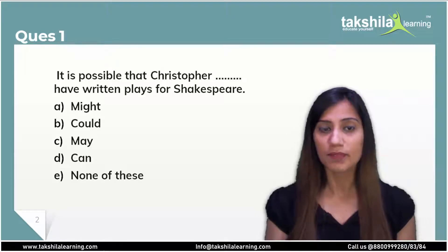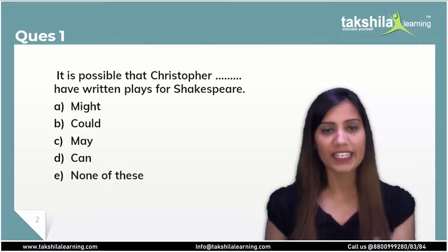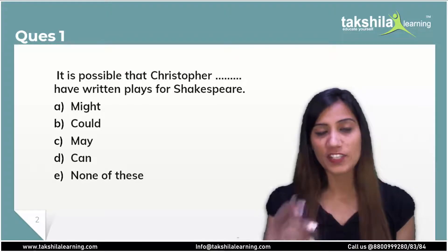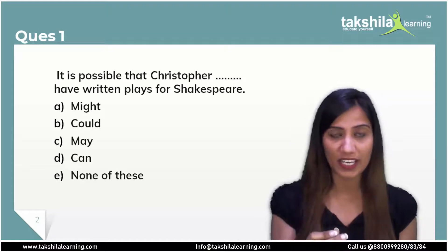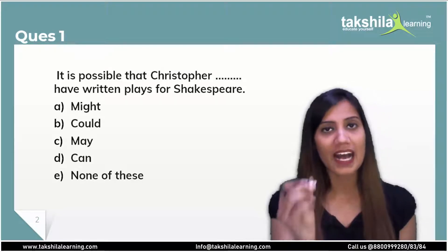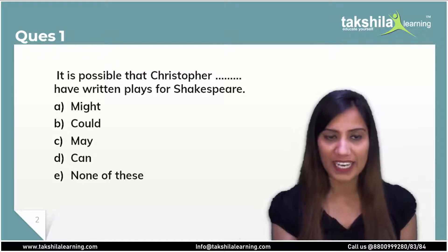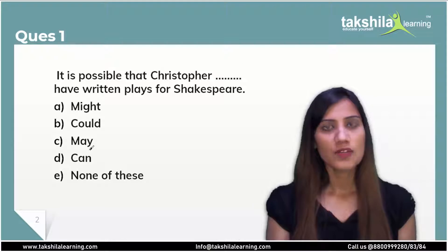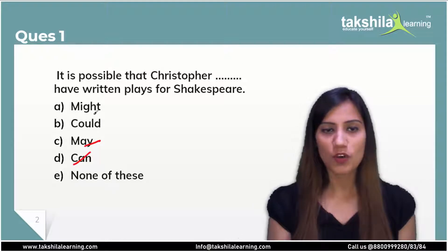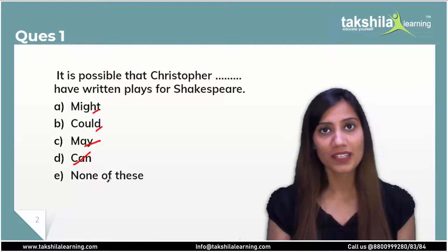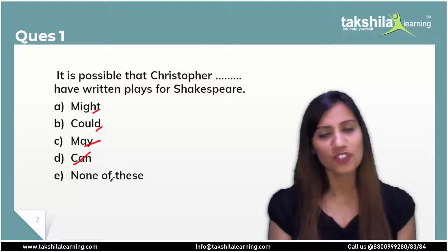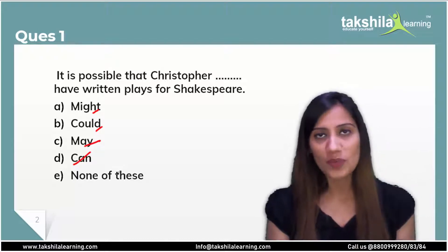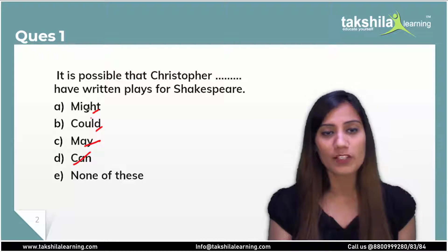So Shakespeare's plays have already been written — that is confirmed. So the form that comes here will be a past form. Therefore, 'may' and 'can' are automatically cancelled out here, because may and can are present forms. So after cancelling may and can, we have two options left: might or could.